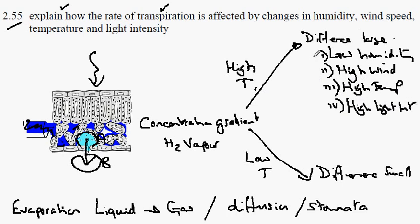So low humidity, high wind, high temperatures, and high light intensity will all lead to a large difference in the concentration gradient between A and B, which will result in fast diffusion. High rates of transpiration.